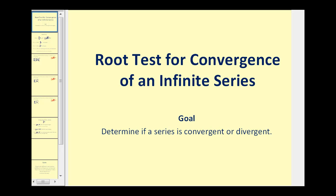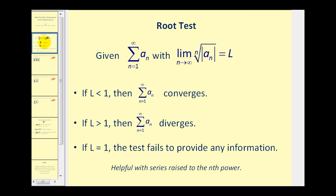Welcome to a lesson on the root test for convergence of an infinite series. The root test states: given an infinite series generated by a sub n, with the limit as n approaches infinity of the nth root of the absolute value of a sub n equals L — if this limit is less than one the series converges, if it's greater than one it diverges, and if the limit equals one the test fails and we must apply a different test.